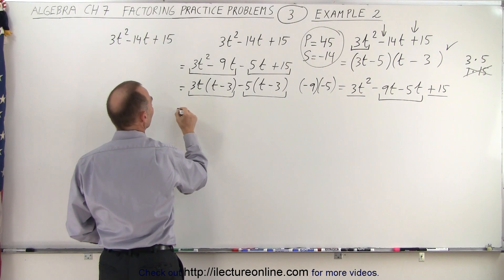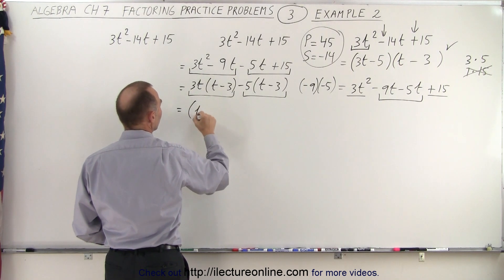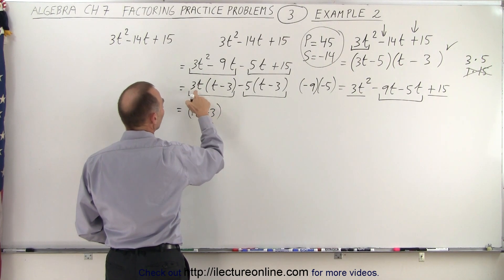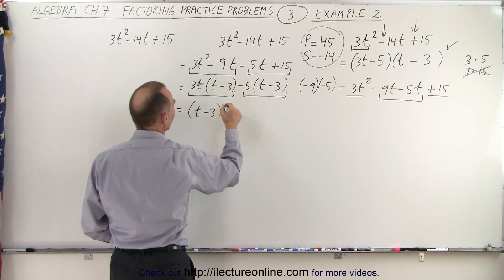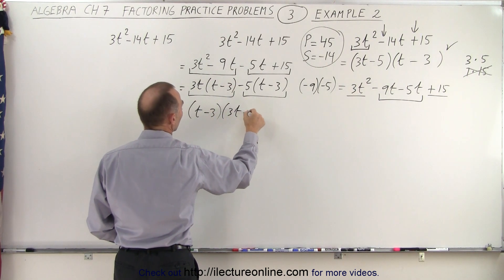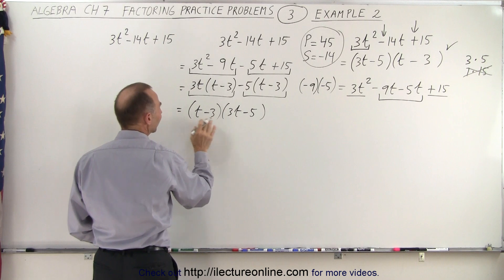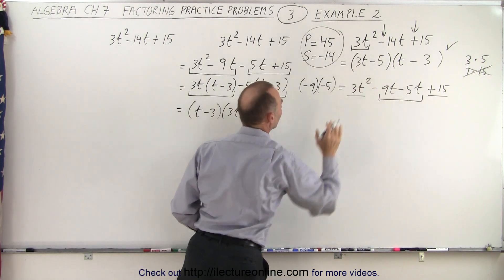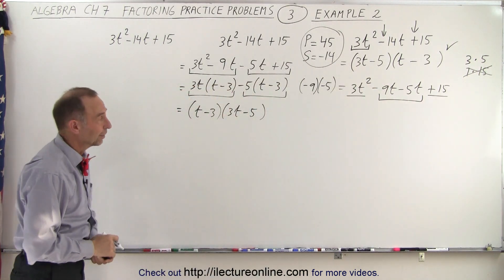You probably want to put some equal signs so this is equal to factor out a t minus 3 and we're left with a 3t minus 5. And notice we get the exact same result as what we had over here. We have it in a different order but of course that doesn't matter.